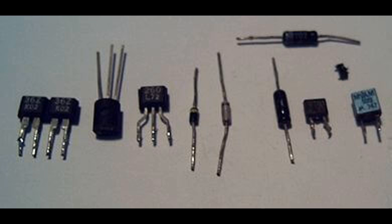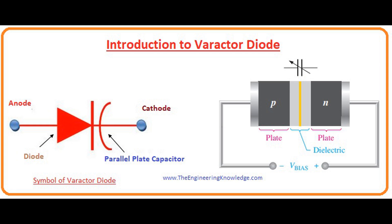As the reverse voltage increases, the depletion region widens and the capacitance decreases. Conversely, as the reverse voltage decreases, the depletion region narrows and the capacitance increases.